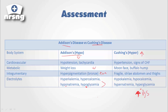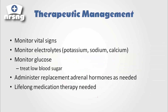How do we treat Addison's disease? Remember, it's hyposecretion of adrenal cortex hormones. We're going to provide replacement adrenal hormones as needed, and lifelong medication therapy is going to be required with these patients. They're going to require electrolyte replacement and steroid replacement for the rest of their life. It can be very difficult for a patient when they find out they have Addison's, because they're not going to feel well without medication and will require this lifelong therapy.